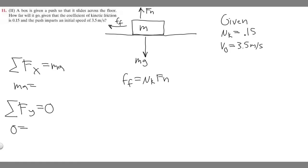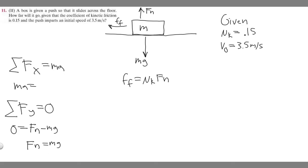Now let's find the sum of forces, starting with the y direction. If a force is going upward, we keep it positive; if downward, it's negative. In the y direction we have F sub n going up (positive) and mg the weight force going down (negative). So F sub n minus mg equals 0, which gives us F sub n equals mg.